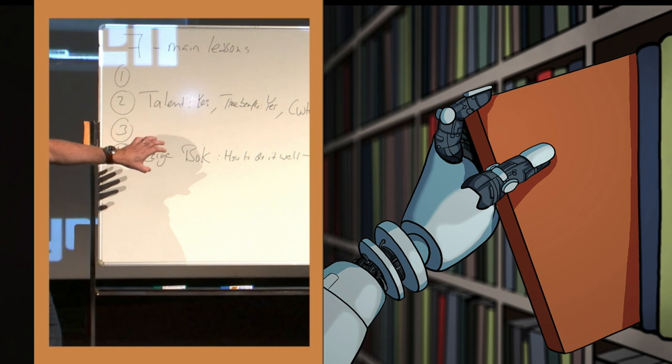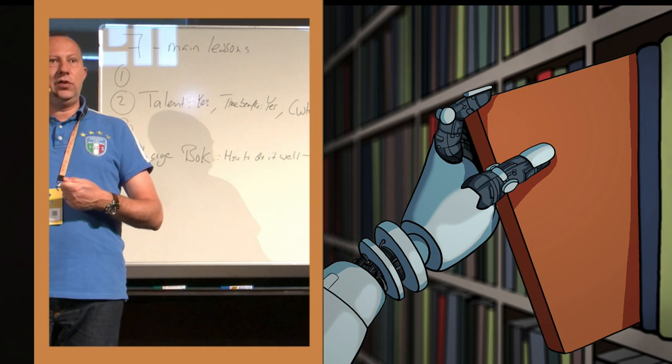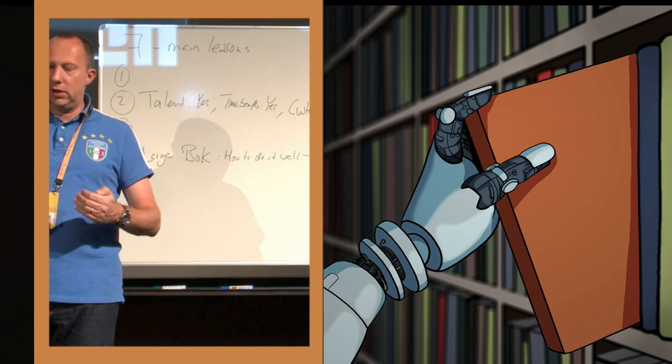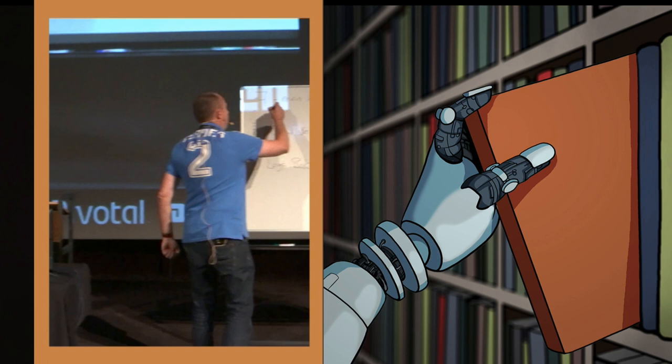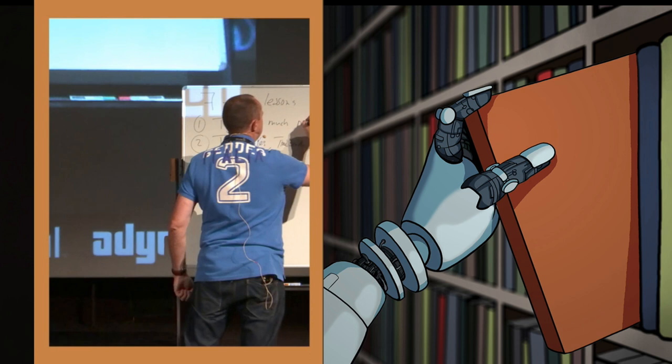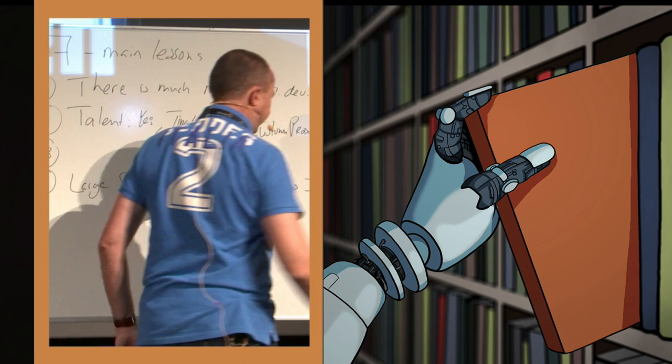One of the things very prominent in the body of knowledge is that distance itself is there, but in many cases the disadvantages are in the perception area. Distance is perceived distance, and you can do a lot to make that perception go down. There is much more distributed development than you think.